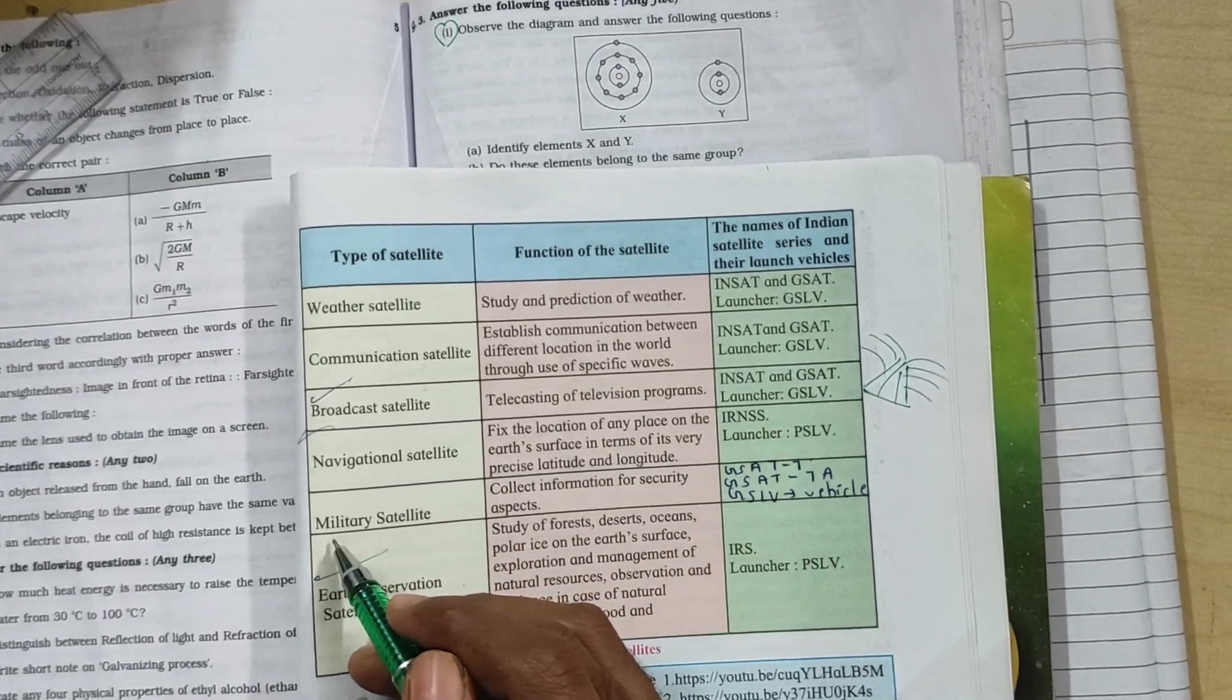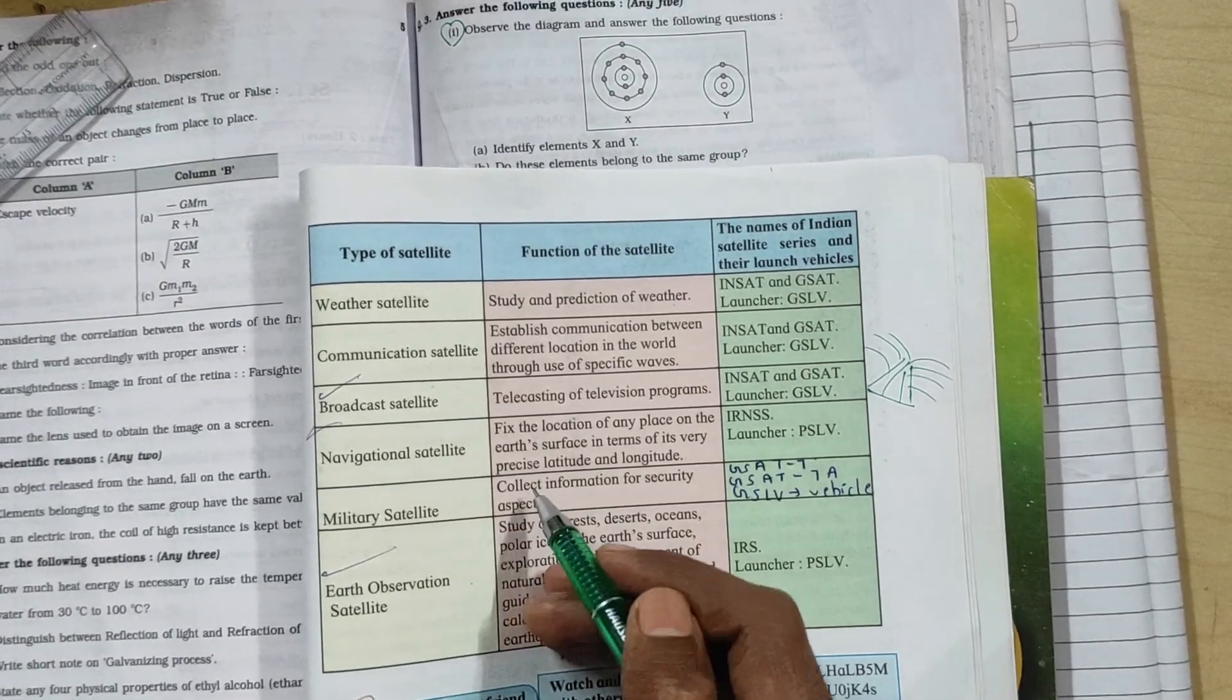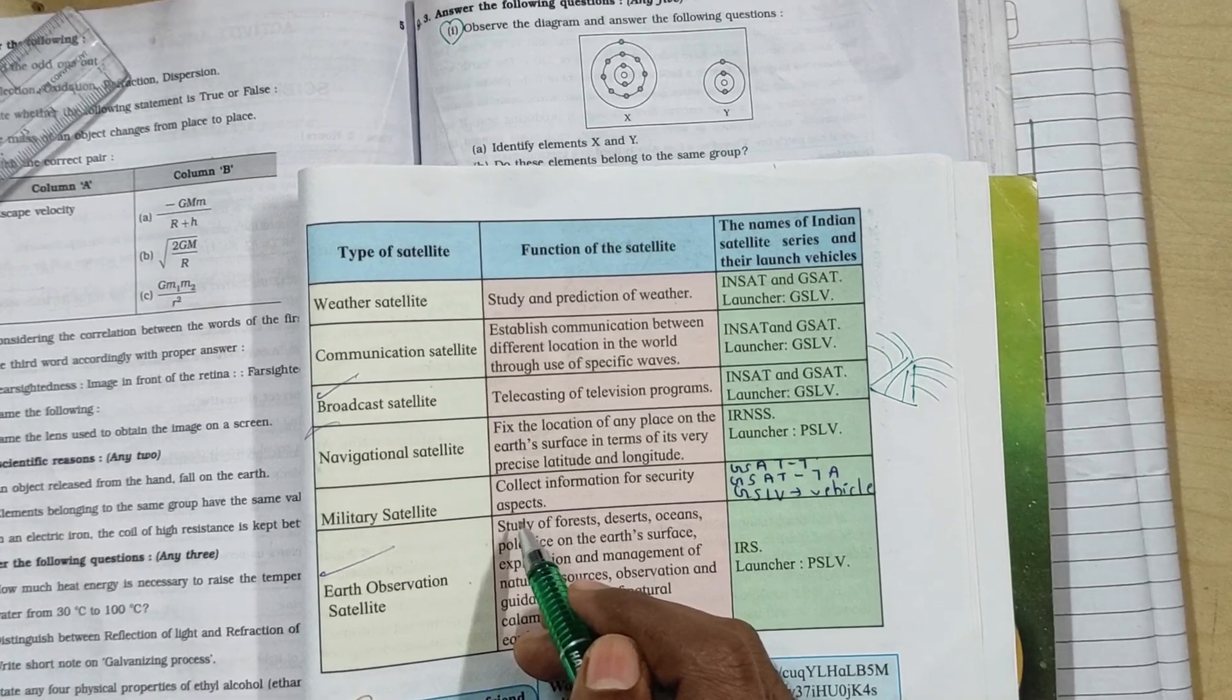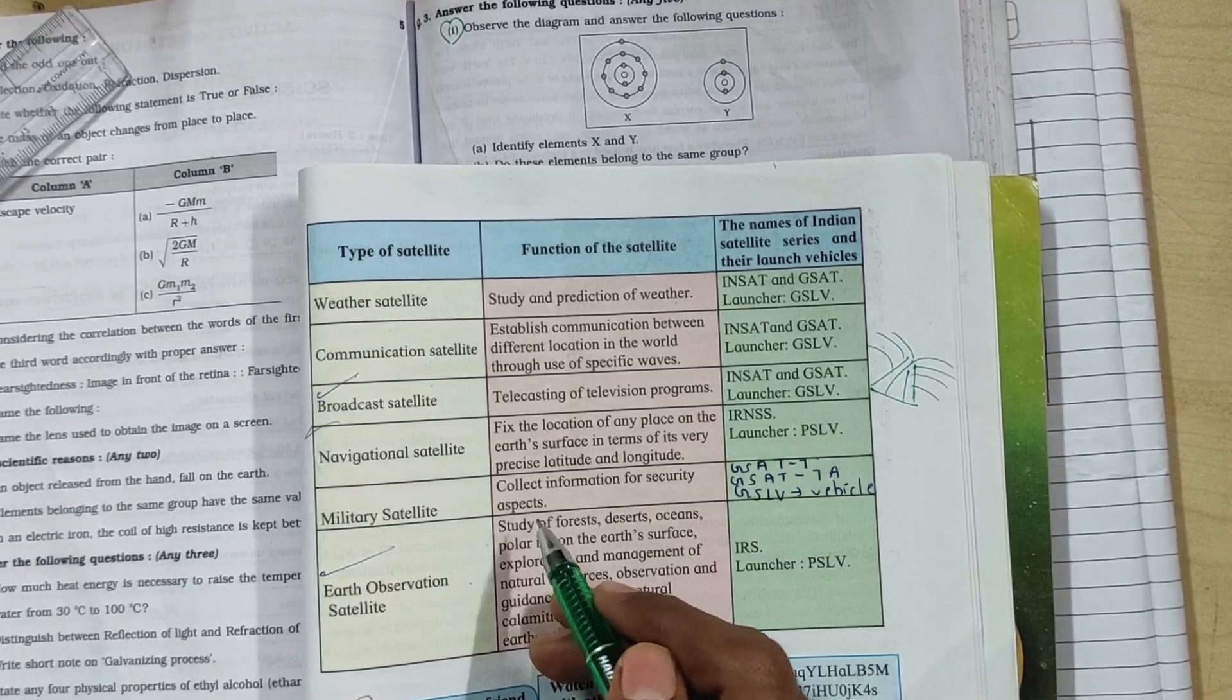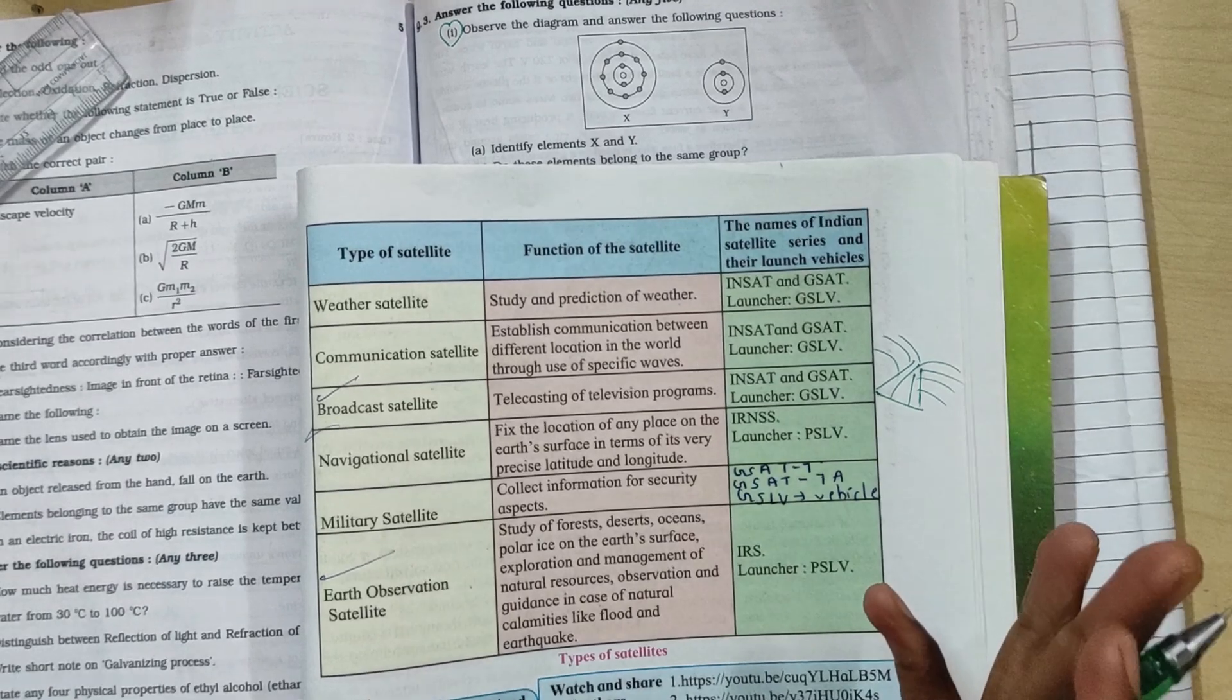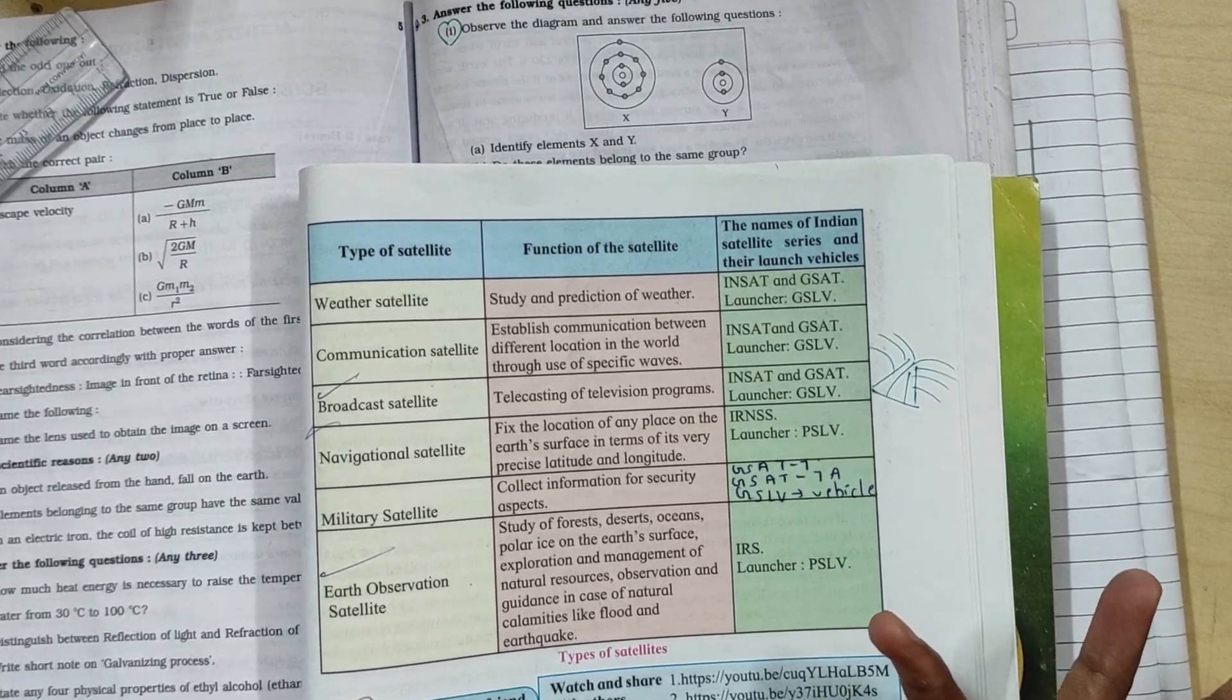Then we have military satellite. Military satellites collect information for security aspects. If somewhere terrorists are planning an attack, we need to find out and stop them. But it won't tell you where exactly because it is classified.